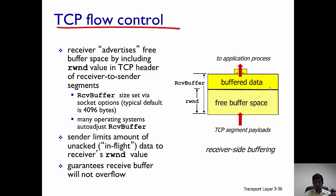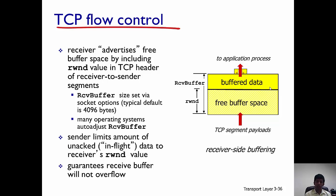The sender then uses this RWND value to determine the amount of unacknowledged data that can be sent to the receiver. This guarantees that the receiver's buffer does not overflow, and this is the principle of flow control. Flow control ensures that packets are not lost at the receiver because of the sender sending too much data too fast.